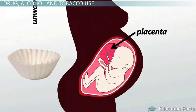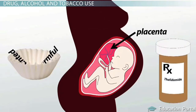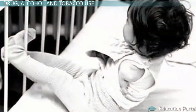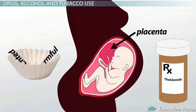Remember when we mentioned that before the 1960s, it was believed that the placenta protected the developing child from harmful substances? The common use of the prescription drug thalidomide for morning sickness during pregnancy changed this idea. A large number of infants with birth defects were born to women who were given this medication during pregnancy. Because of this, we now know that medications can have harmful effects on the prenatal environment.